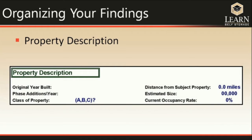A Class B property may not have climate control, is a little more worn on the exterior and interior, and was probably built within the last five to ten years. It still has security, but not as high-tech. A Class C property is probably 15 to 30 years old with very little security — possibly just a chain-link fence. If you're building a brand new property, Class C facilities aren't really your competition. Also note the competitor's distance from your property, estimated size, and current occupancy rate.